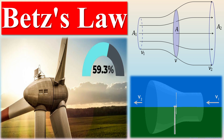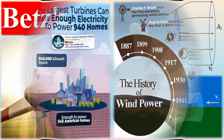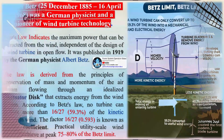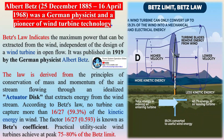Albert Betz (December 25, 1885 – April 16, 1968) was a German physicist and pioneer of wind turbine technology. Betz's law indicates the maximum power that can be extracted from the wind, independent of the design of a wind turbine in open flow. It was published in 1919 by the German physicist Albert Betz.